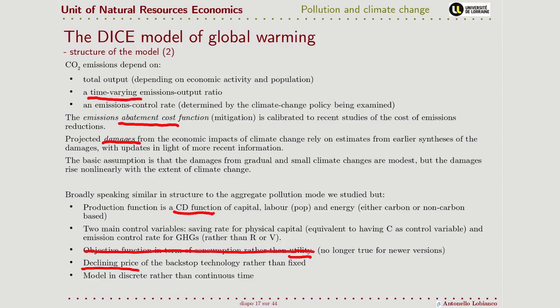Perhaps more importantly, in our very simple model the decay rate of greenhouse gas pollutants was constant. Here, in an exogenous way, it is varying — the decay rate is not constant, but decreases over time.